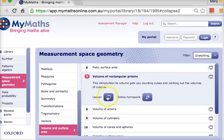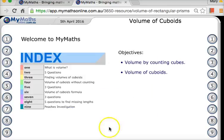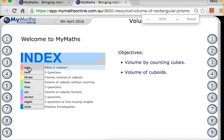Click on Volume of Rectangular Prisms. I don't want you doing the online homework, just click on Lesson. When you press that, you'll see there are nine screens or pages in this lesson.